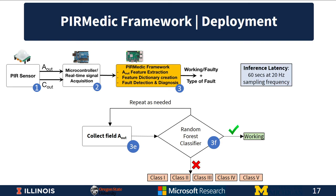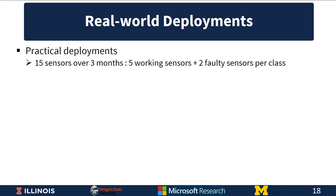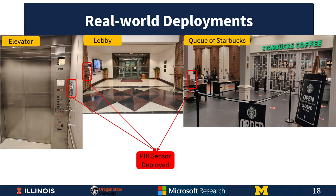The inference latency for the framework is 60 seconds at 20 Hz sampling frequency — 20 Hz because human motion is often restricted to 10 Hz, and the factor of two comes from the Nyquist sampling theorem. We tested PAR Medic using practical real-world deployments with 15 sensors over three months, consisting of five working sensors and two faulty sensors per class, deployed in the elevator of our building, the lobby, and the queue of a local Starbucks coffee shop.